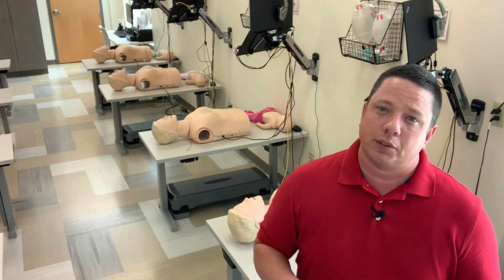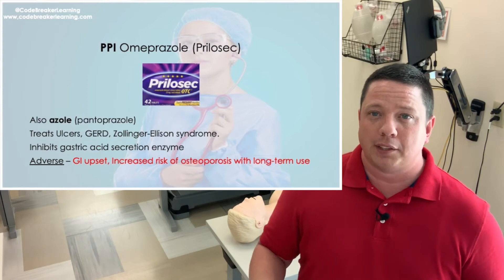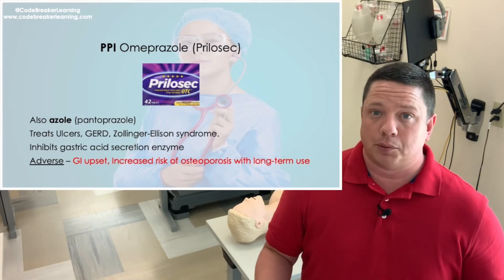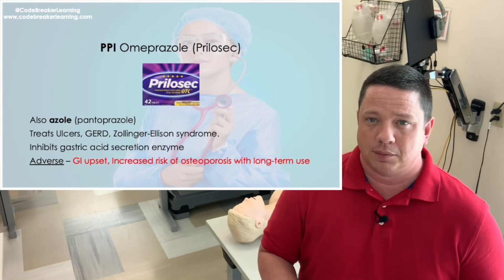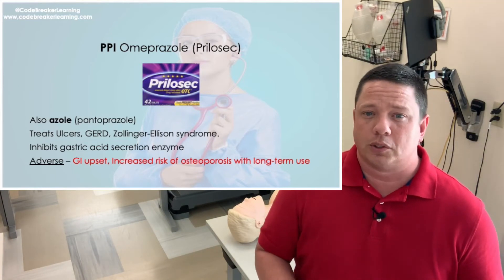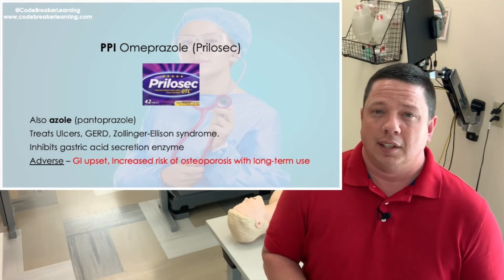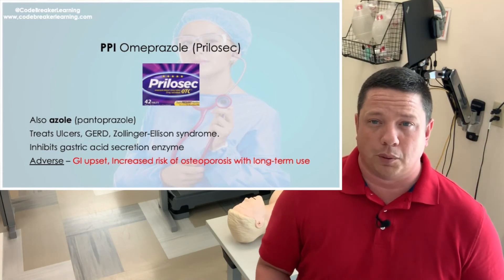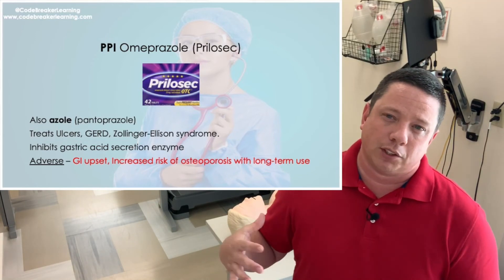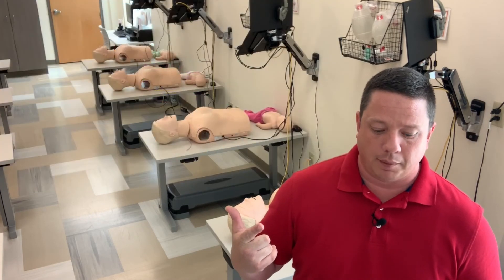The last medication in this sequence is proton pump inhibitors — your '-azoles.' Omeprazole, known as Prilosec, and Pantoprazole, known as Protonix. These medications with the suffix '-azole' are proton pump inhibitors that decrease acid secretion in your stomach. They're used for ulcers and GERD by inhibiting the gastric acid secretion enzyme. This medication may cause GI upset and increases risk for osteoporosis with long-term use. For anyone with bone disorders, encourage increased intake of calcium and vitamin D.